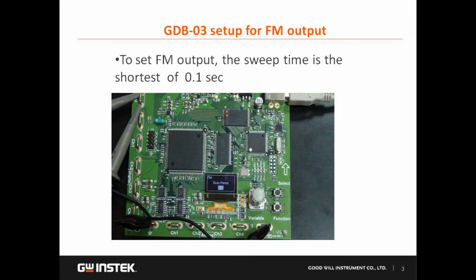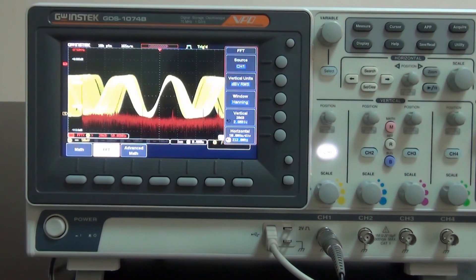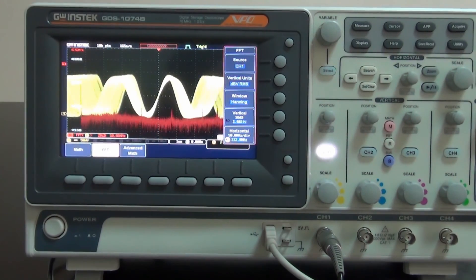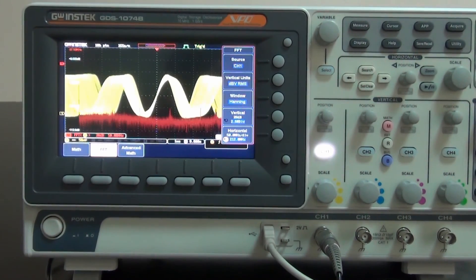Next, we are going to compare waveform update rate by FM signals. Again, GDB-03 is used to generate an FM signal. We can clearly see that GDS-1074B reveals fast waveform update rate and rapid FFT display.